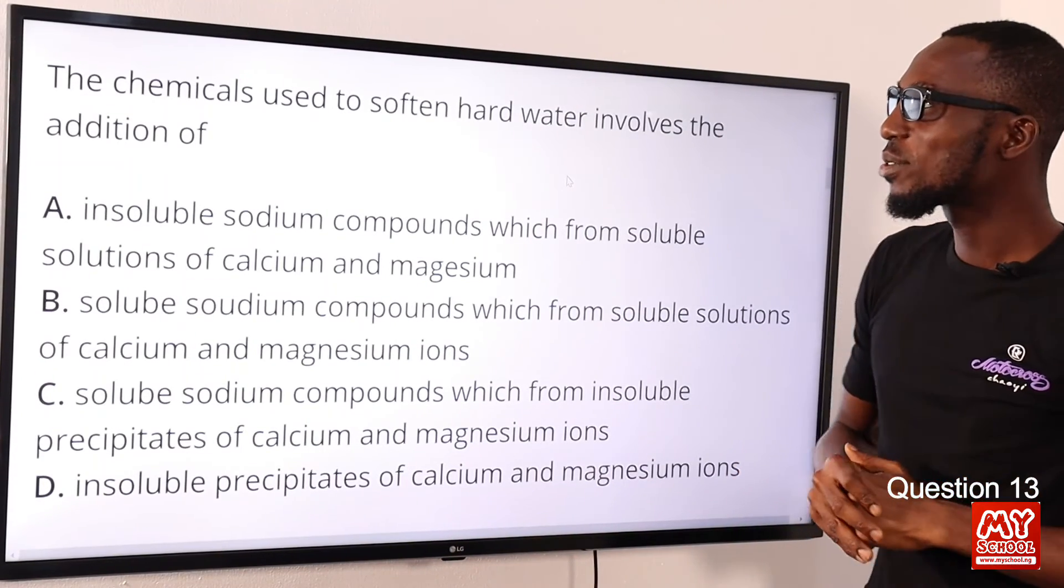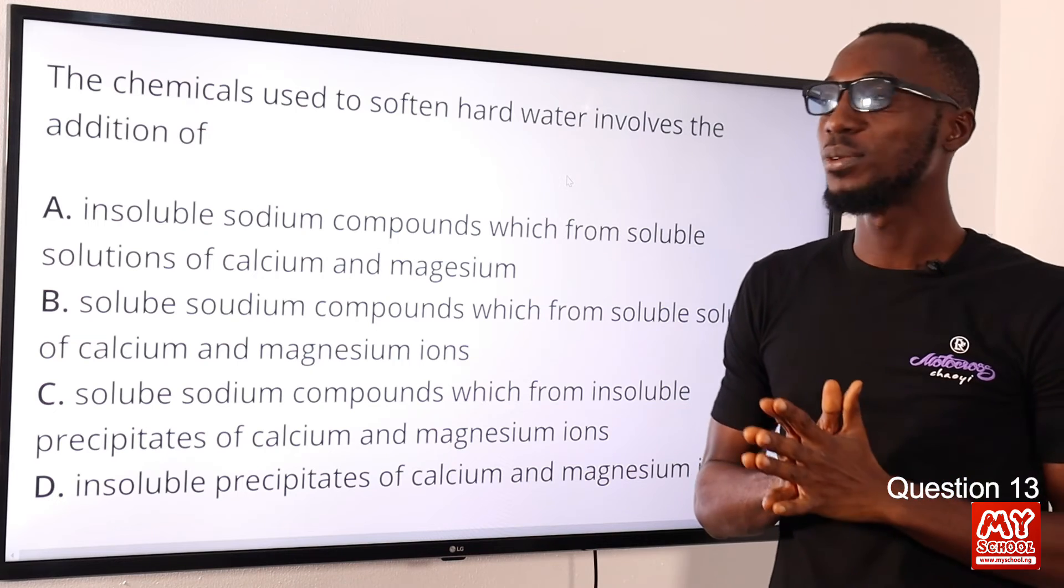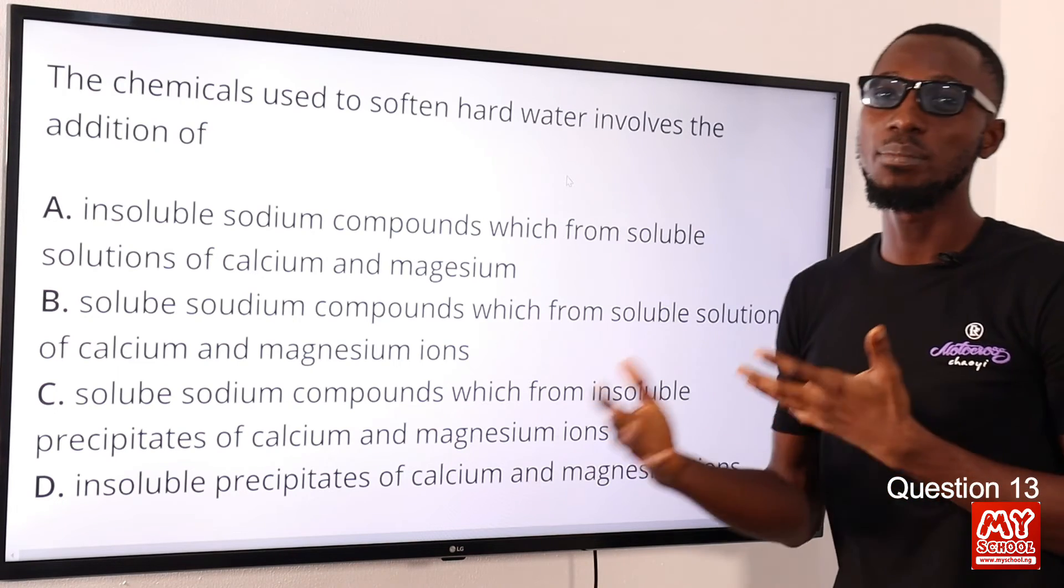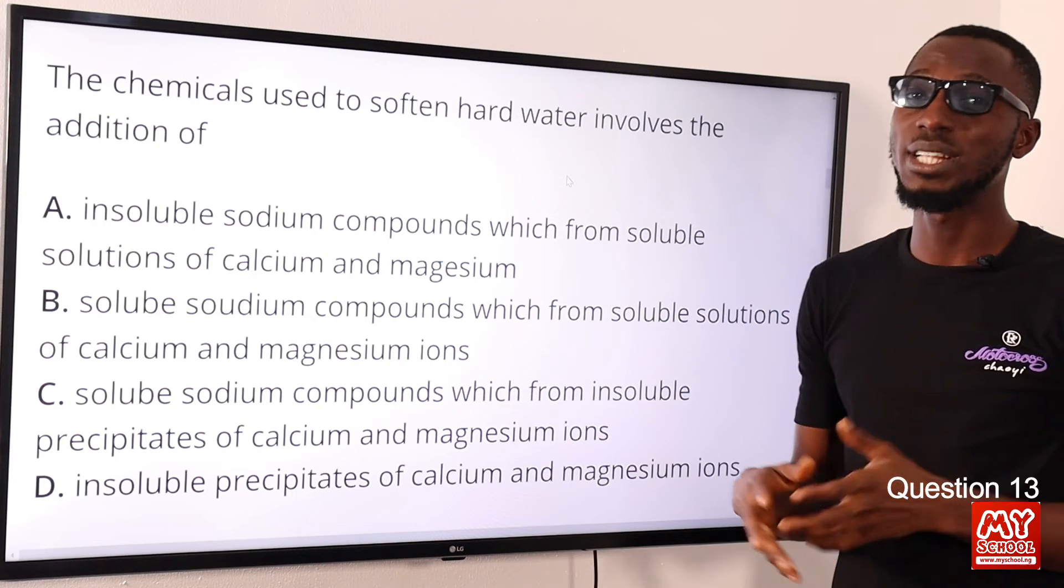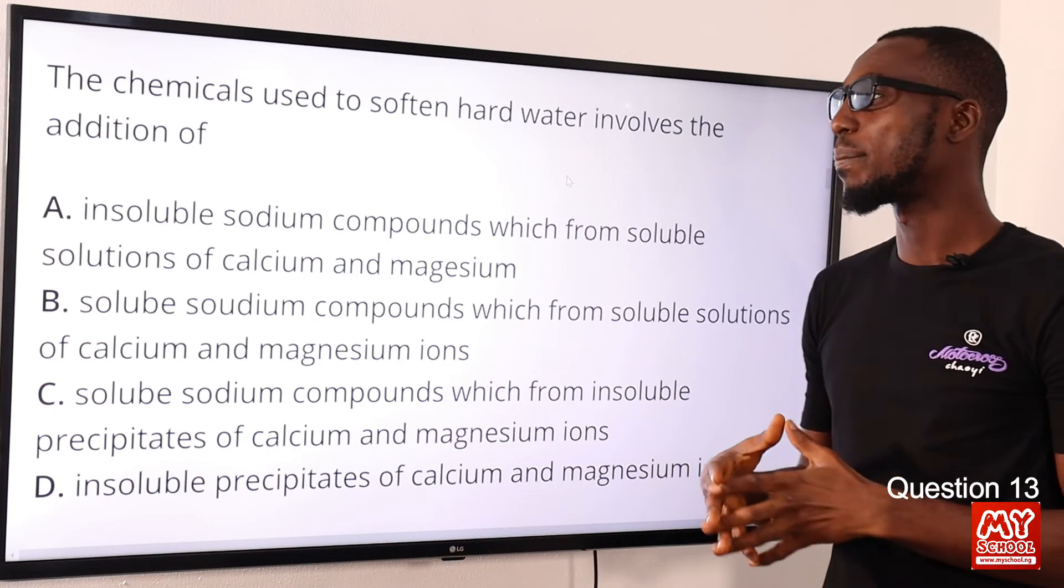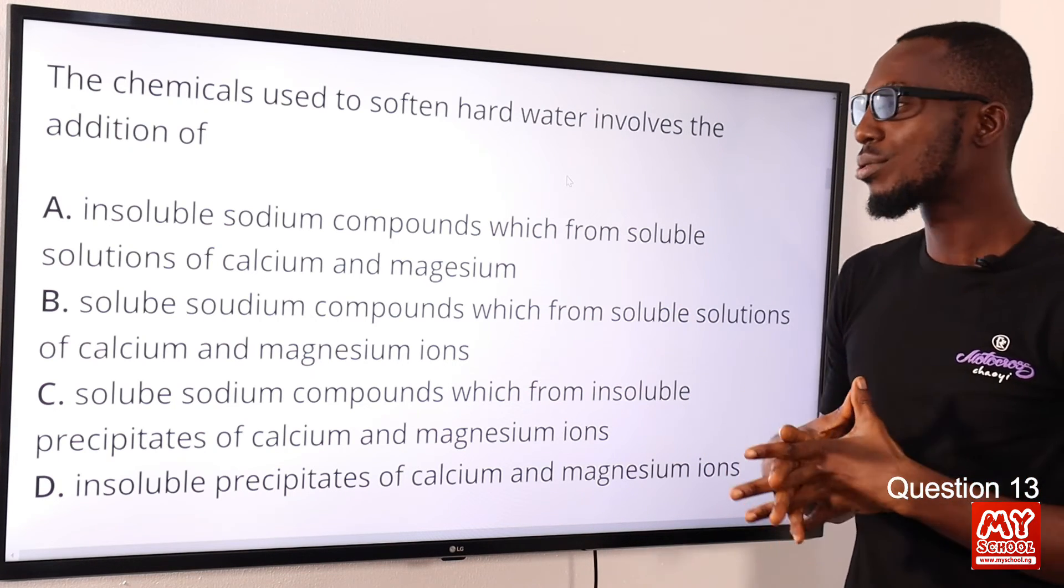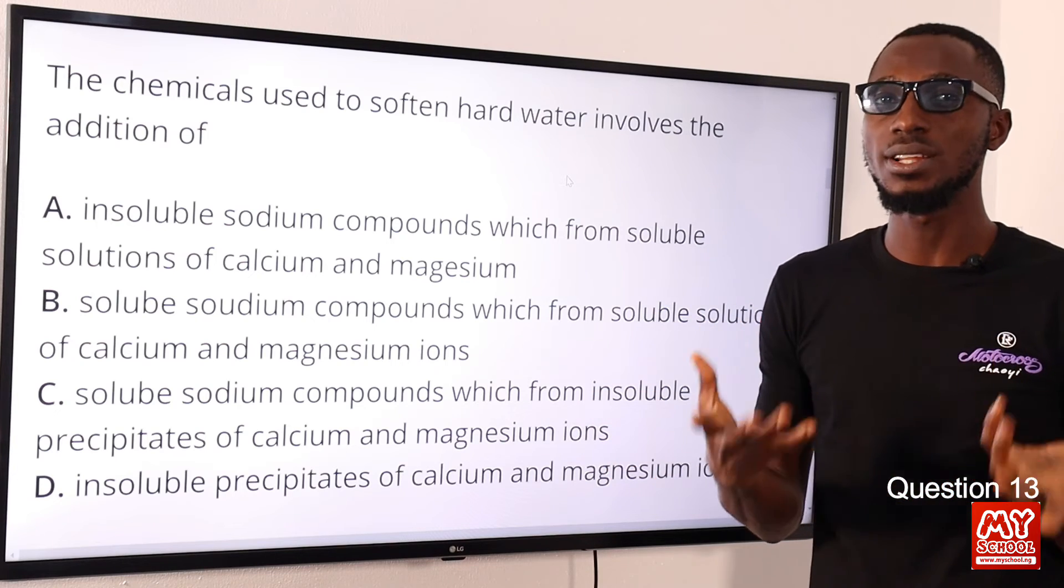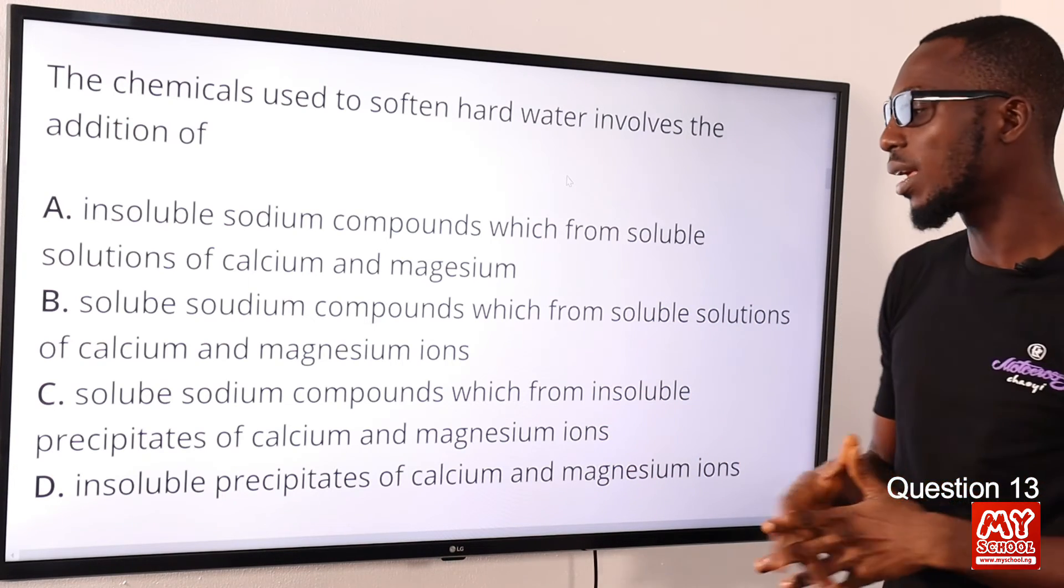Question 13: The chemicals used to soften hard water involves the addition of what? When you talk about hard water, we have the temporary hard water and the permanent. The temporary can be removed by just boiling. When you talk about the permanent hard water, this is due to the presence of calcium and magnesium ions.